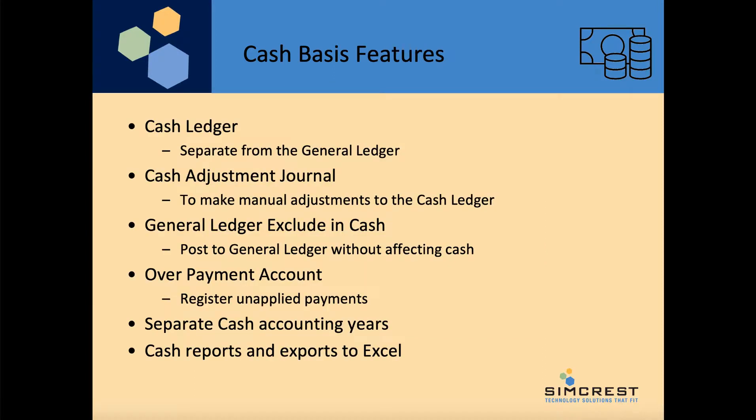The features of Cash Spaces include a Cash Ledger, where we register all the cash entries and it is completely separate from the general ledger. We have a cash adjustment journal where we can allow manual adjustments to the cash ledger that would otherwise be impossible to do through the general ledger. We also have a general ledger excluding cash feature that allows you to post general ledger entries without affecting cash.